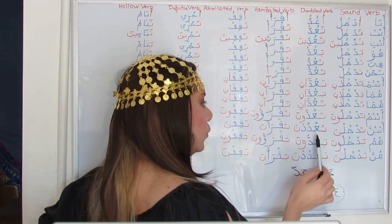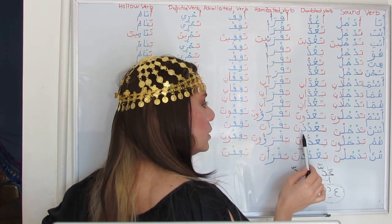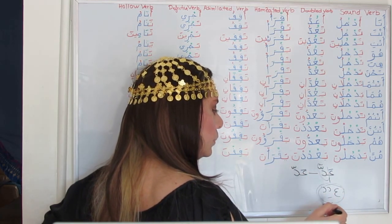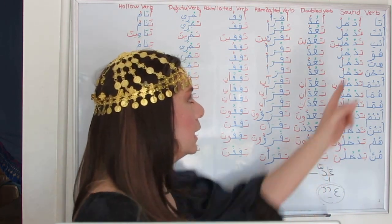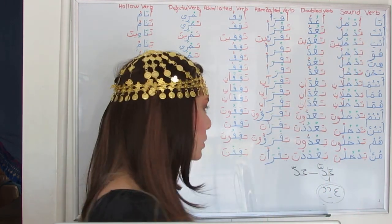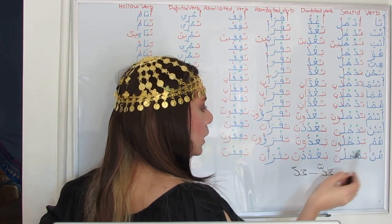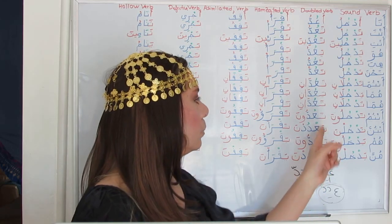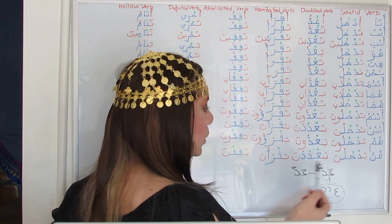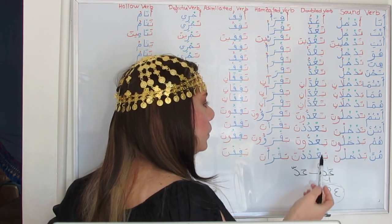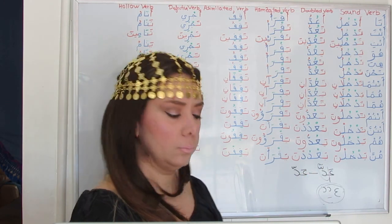With a Sukun on the first radical, Dhamma on the second, and Sukun on the last radical — because here it acts like a regular sound verb with three root letters. Antum ta'udduuna and hum ya'udduuna are similar, just with a different prefix. Hunna and antunna are similar: antunna ta'dudna, hunna ya'udna — with a different prefix.